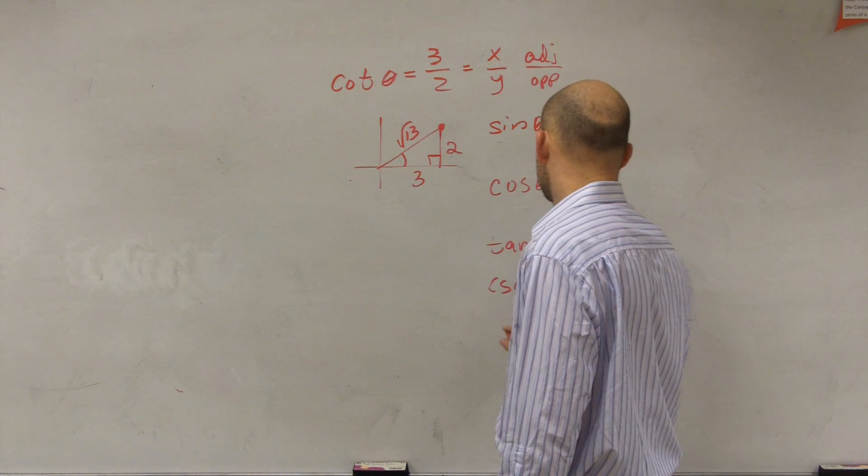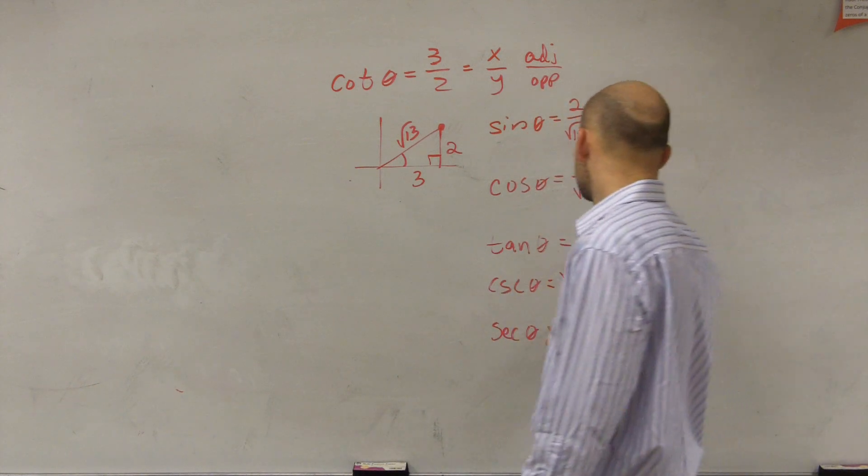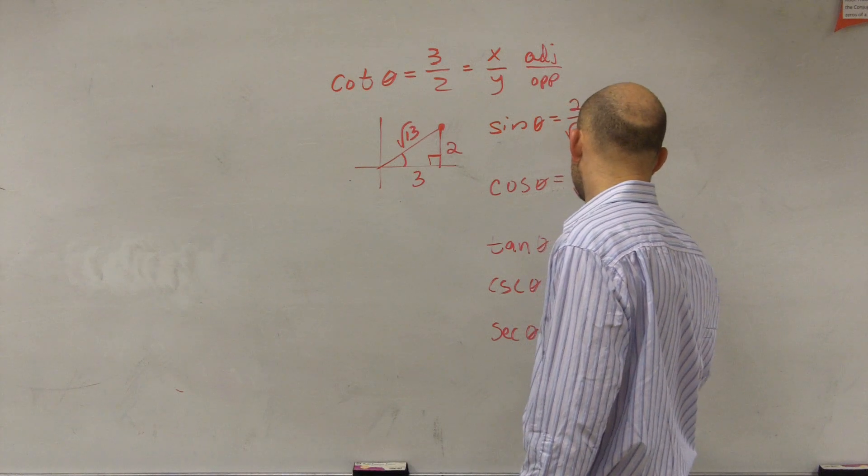Square root of 13 over 2. And secant, which is the reciprocal of cosine, is going to be square root of 13 over 3.